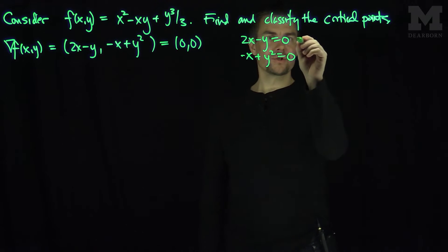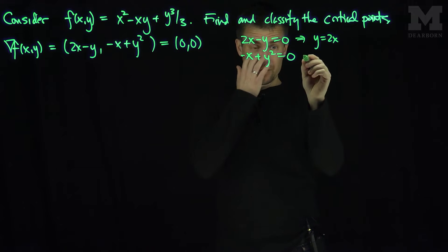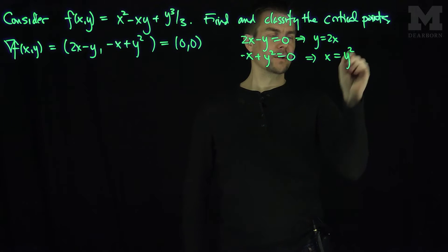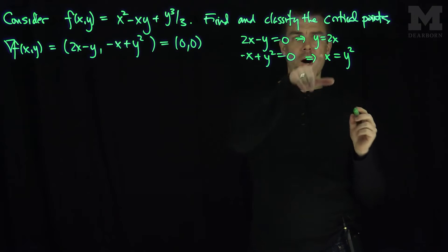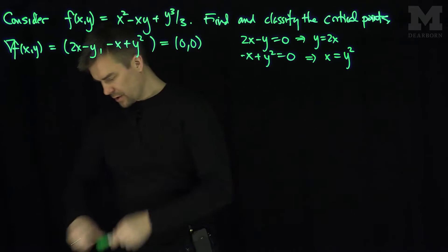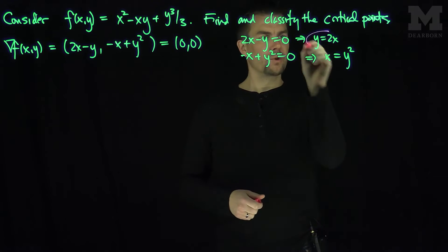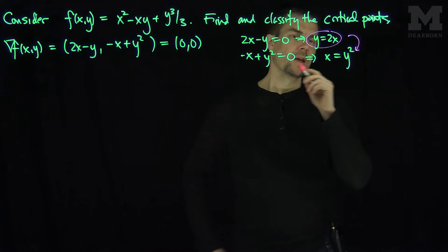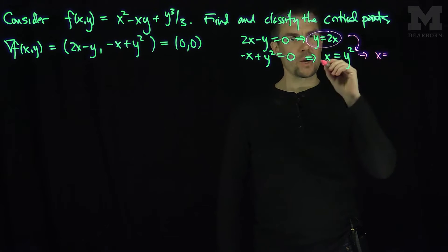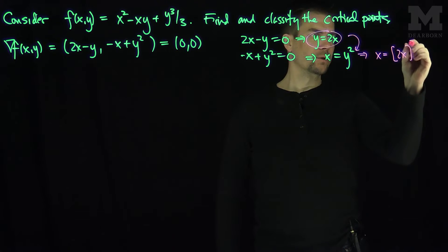The first equation tells me that y = 2x. The second equation tells me that x = y². Since y = 2x, I can substitute y = 2x into the second equation, which gives x = y² = (2x)².